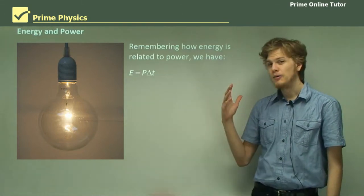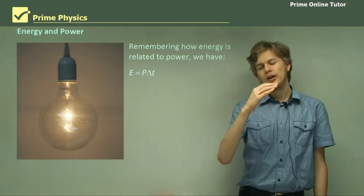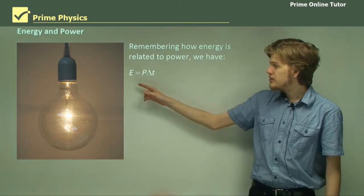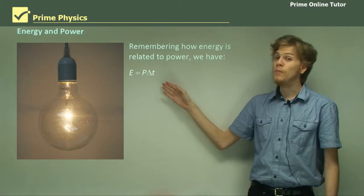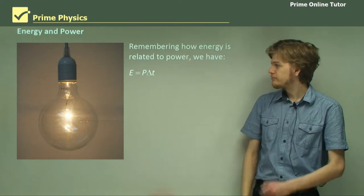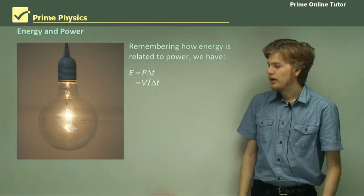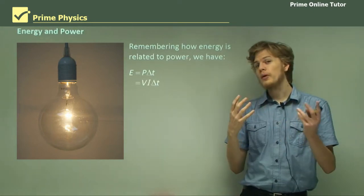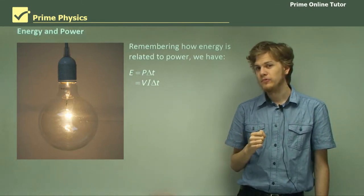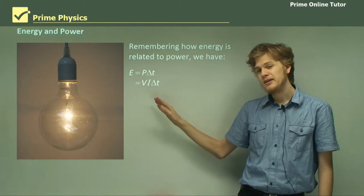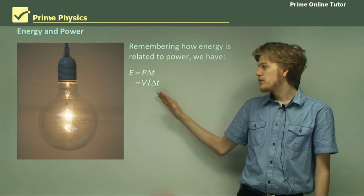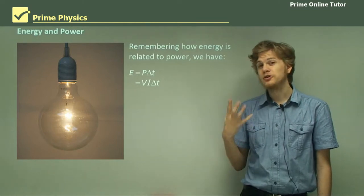Now, because energy is related to power, by power equals energy over time, we can rearrange this equation. Energy equals power multiplied by time. And knowing what we do about power, we can use VI instead of P. So energy radiated by a resistor is the voltage across it times the current through it times the amount of time you wait.